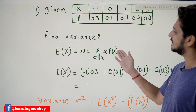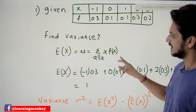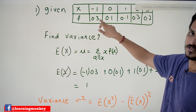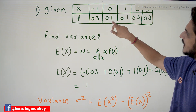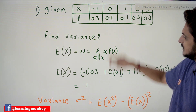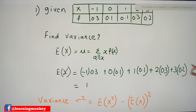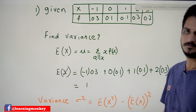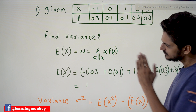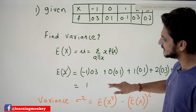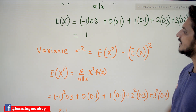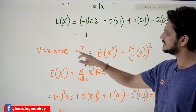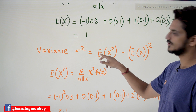To compute E(X), we substitute: minus 1 multiplied by 0.3, plus 0 multiplied by 0.1, and so on for all values. After doing all this calculation, the expected value of X equals 1.